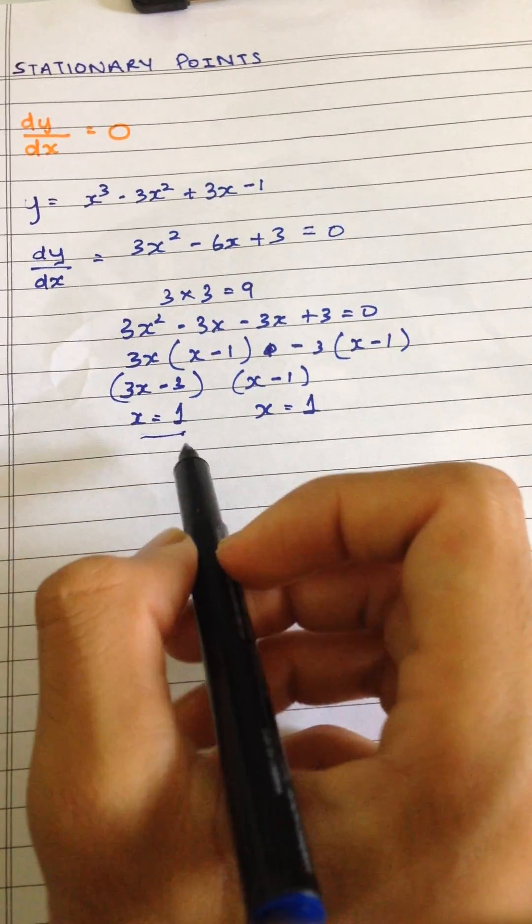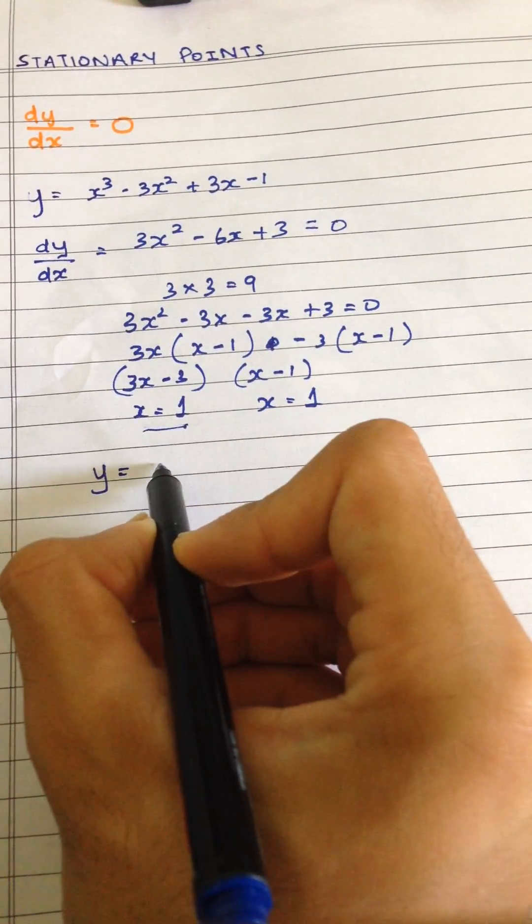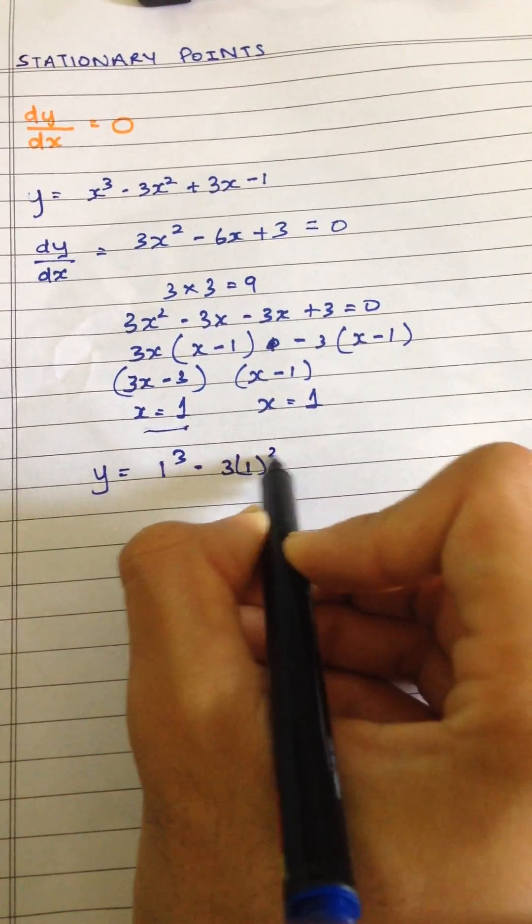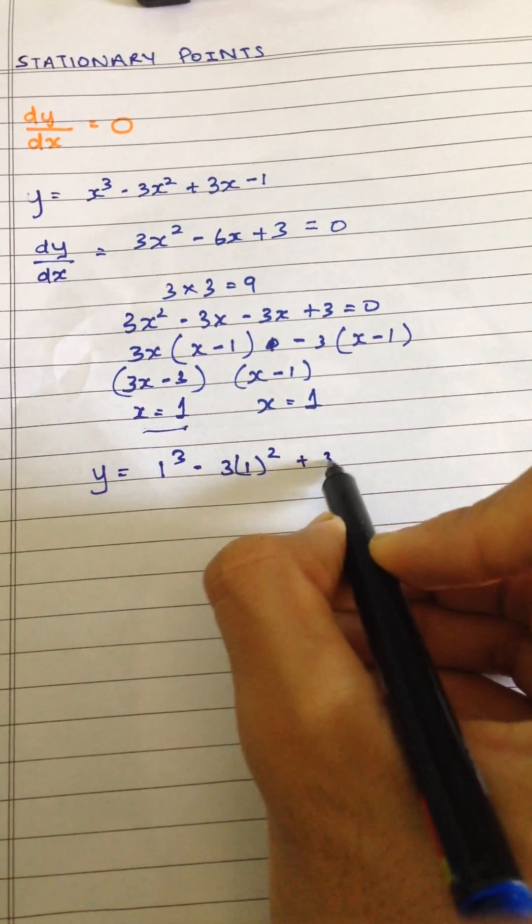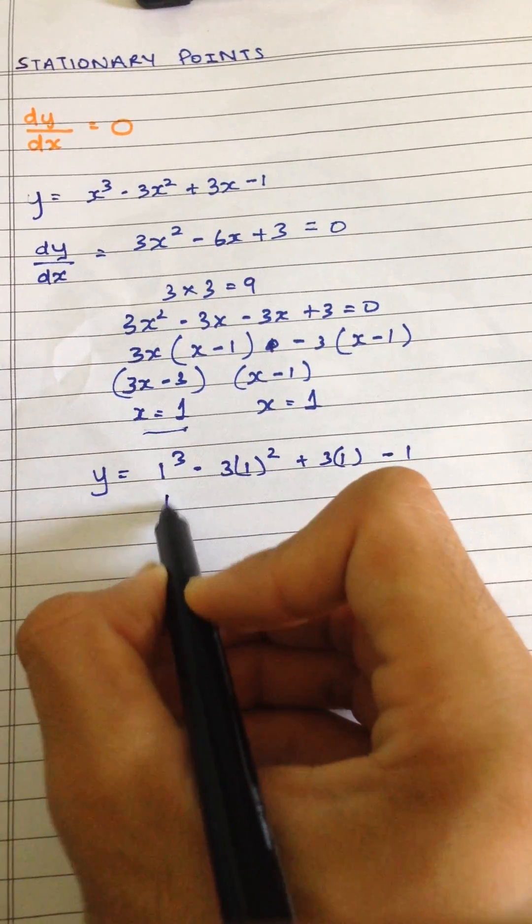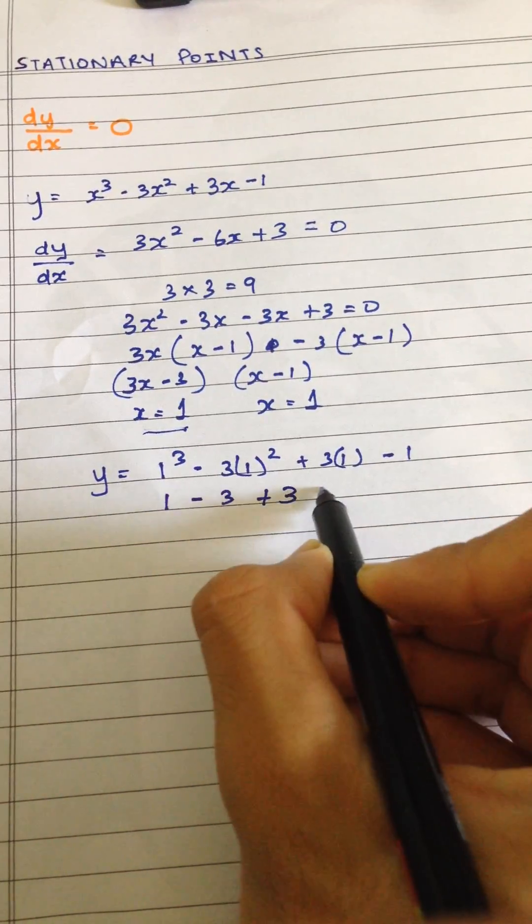So we can simply substitute it in the equation. So that would be y is equal to 1 cubed minus 3 multiplied by 1 squared plus 3 multiplied by 1 minus 1. So it's quite simple, 1 minus 3 plus 3 minus 1.